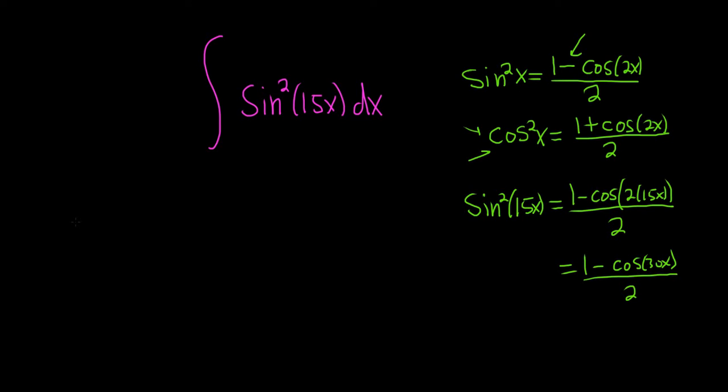So let's go ahead and rewrite our integral using what we've done. So this is going to be equal to the integral of 1 minus cosine of 30x, all divided by 2, and then we have our dx here. Then we can break this up into 1 over 2 minus cosine of 30x over 2, and then we have our dx.